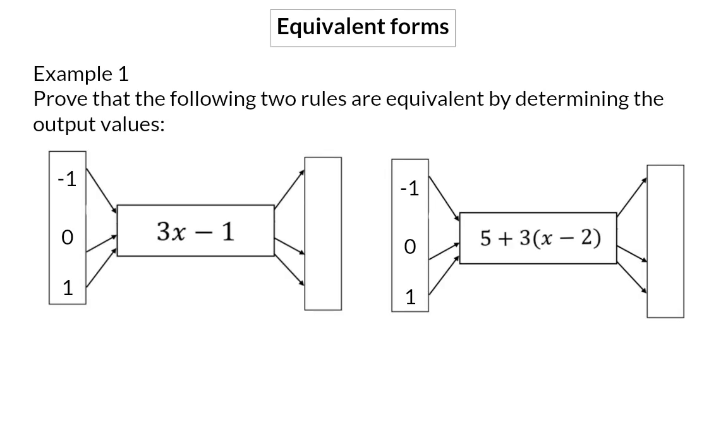Example 1. Prove that the following two rules are equivalent by determining the output values. For the two flow diagrams, we are given two different rules, but for both we have the same input values. So, if we also get the same output values, it means these two rules are equivalent.